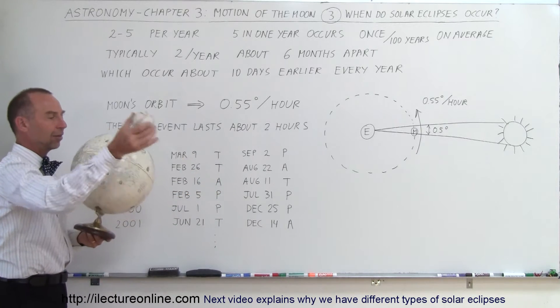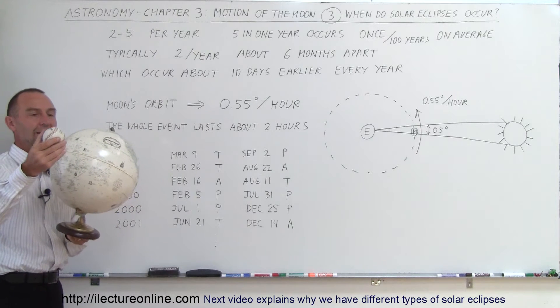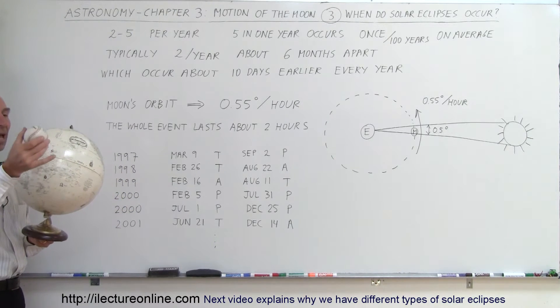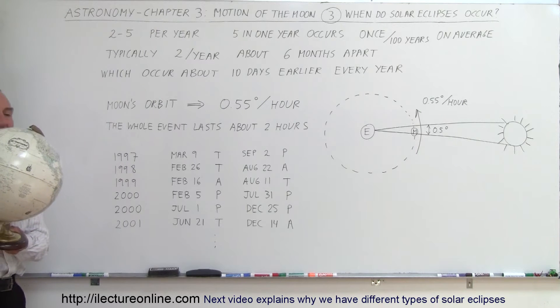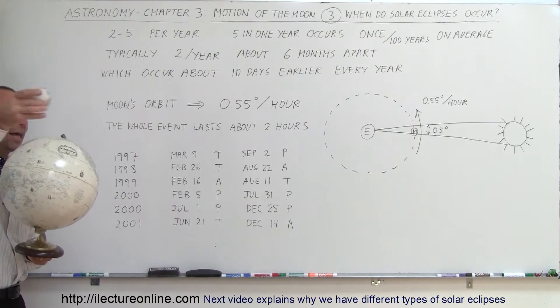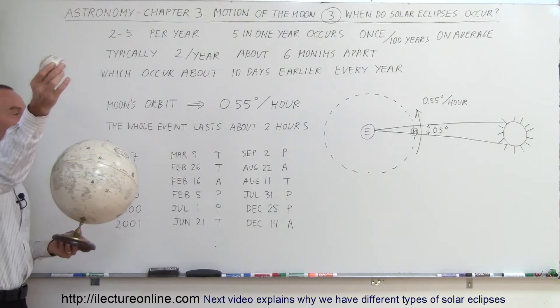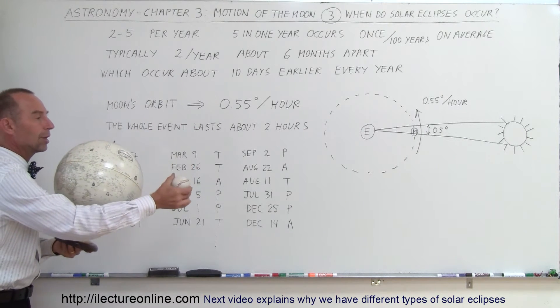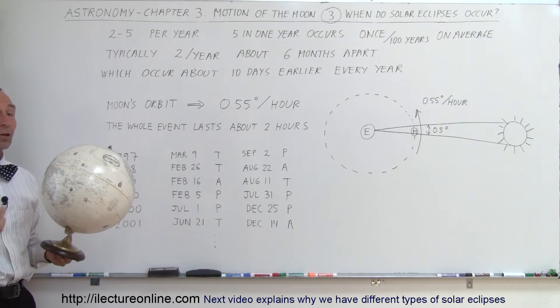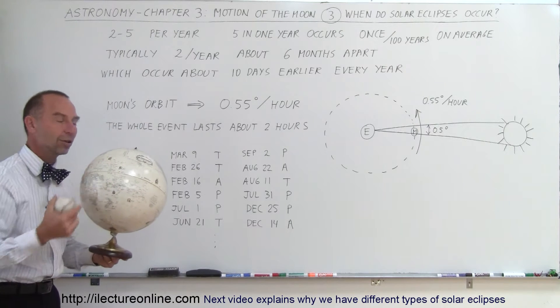But a month later, as the Moon continues to go around the Earth, there will be more of a chance for that to happen. And then finally, the Earth, the Sun, and the Moon will be in a position such that the Moon will cut right through the ecliptic plane when it travels between the Earth and the Sun, and at that point, the Moon can block the light between the Sun and the Earth.